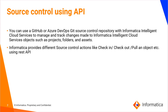You can use GitHub or Azure DevOps Git source control repository with Informatica Cloud Service to manage and track changes made from Informatica Cloud Services, such as folders of projects, assets, and individual code within the folder. Informatica provides different source control actions like check-in, check-out, pull an object, and get a hash commit for a checked-in object. You can also use those APIs to deploy code from a lower environment to a higher environment.